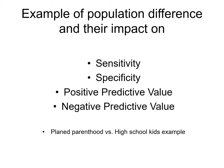Population differences can really have an impact on sensitivity, specificity, positive predictive value, and negative predictive value. Importantly, sensitivity and specificity represent the instrument's ruling and will not change when you switch the population. What will change when you switch the population is the positive predictive value and the negative predictive value.